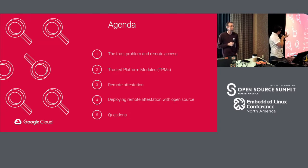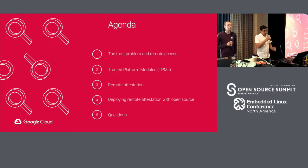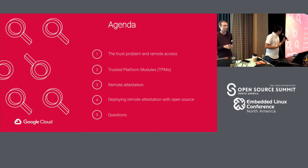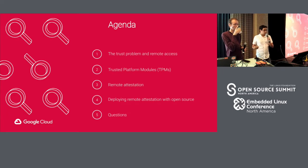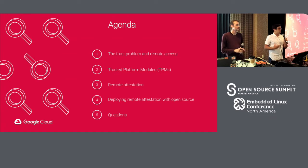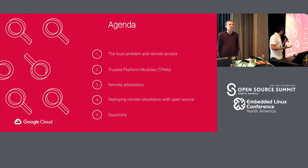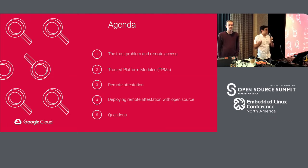Foremost, we're going to be talking about the problem that we're trying to solve — it is fundamentally a trust problem. Then Matthew will go over how we're using the TPM, the trusted platform module, in order to give us the primitives we need to do remote verification. Then we'll go over an end-to-end example of remote attestation and walk you through some of the tools that we've built and are continuing to open source that allow you to build this capability yourself.